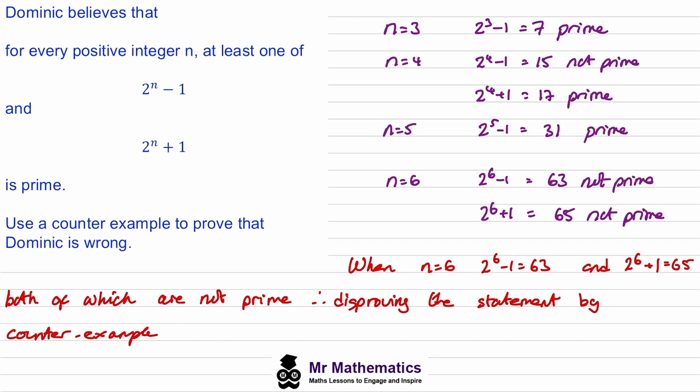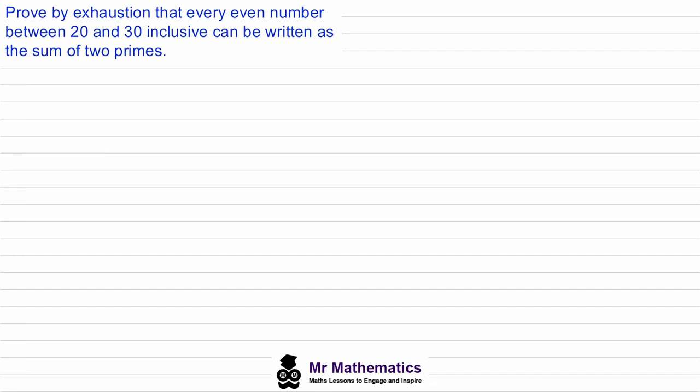In our next example we're going to look at a different method of proof. We've been asked to prove by exhaustion that every even number between 20 and 30 inclusive can be written as a sum of two primes. We can prove a mathematical statement is true by exhaustion by breaking the statement into smaller cases and proving each one separately. So we need to look at all the even numbers between 20 and 30 inclusive.